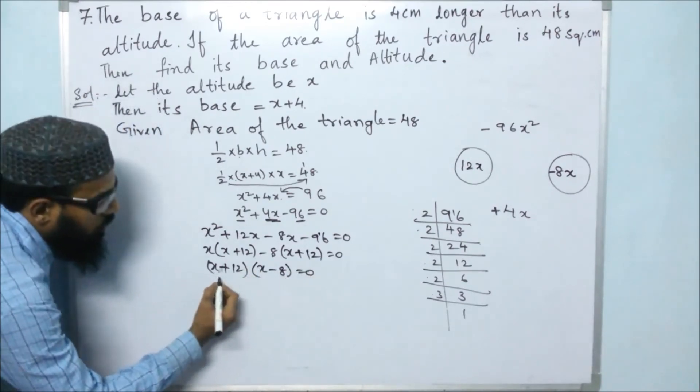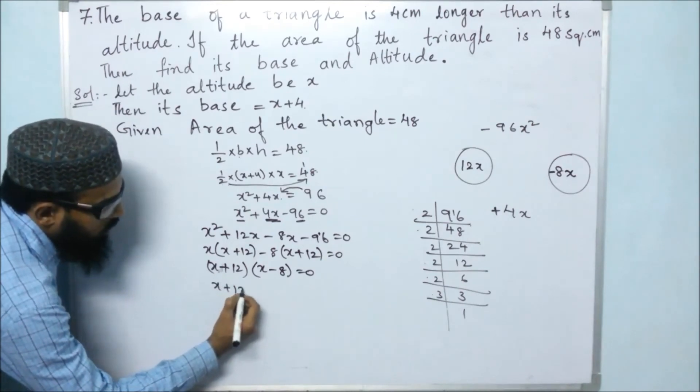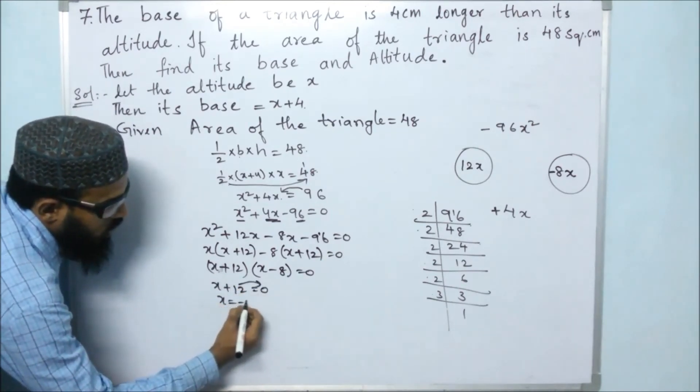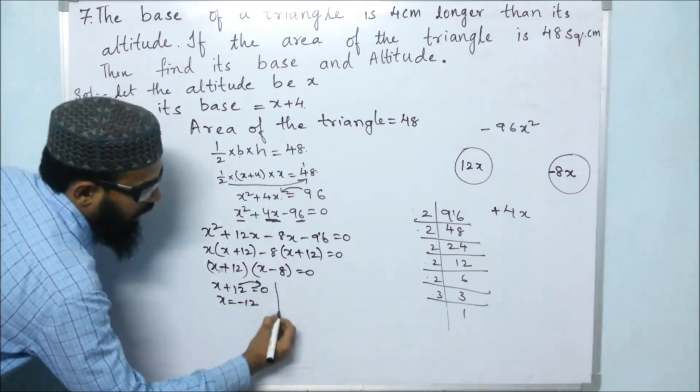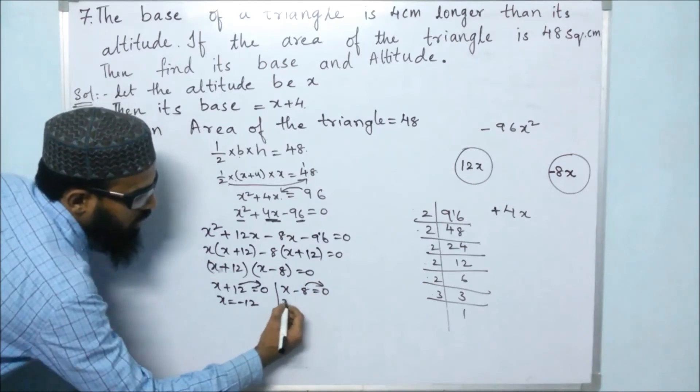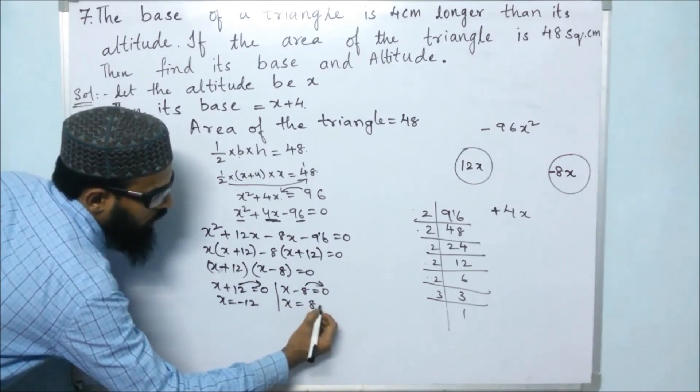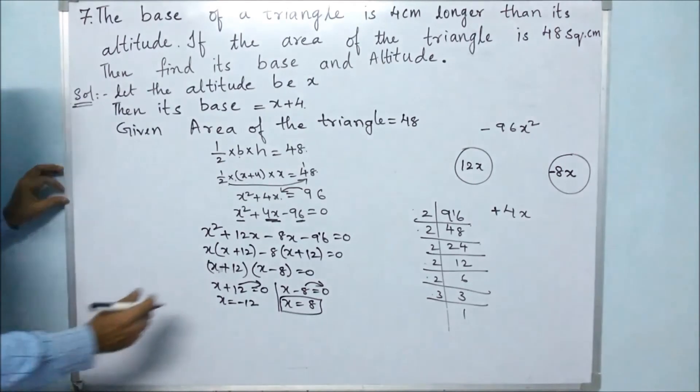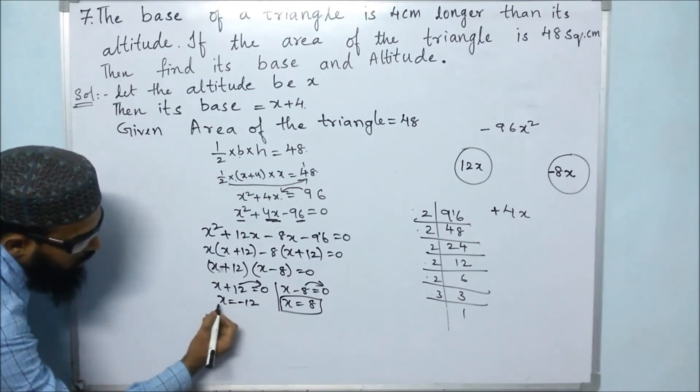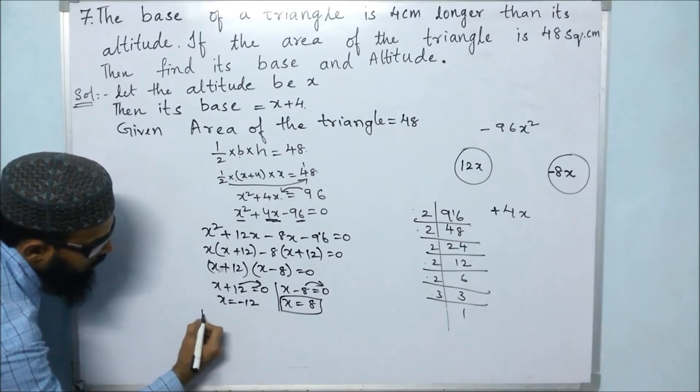X plus 12 equals 0. Plus 12 becomes negative, so x equals minus 12. And x minus 8 equals 0. Minus 8 becomes plus, so x equals 8. This negative value is discarded. Discard the negative value.